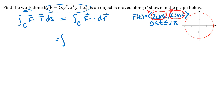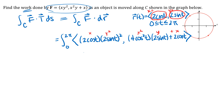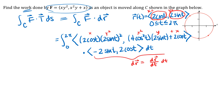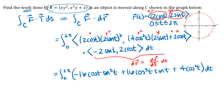Setting up the integral: t goes from 0 to 2π; F becomes x y² with x and y replaced by the curve equations; dr is dr/dt dt. So I dot F with dr/dt dt. At that point everything is set up and I do the dot product, which involves some simplification. Students often make careless mistakes here that turn the integration into a nightmare. The integration typically involves powers of sines and cosines, so you may need to review those techniques.